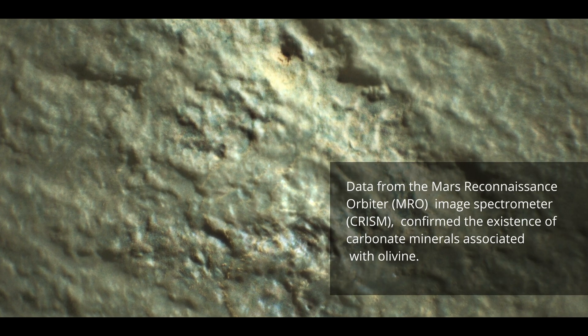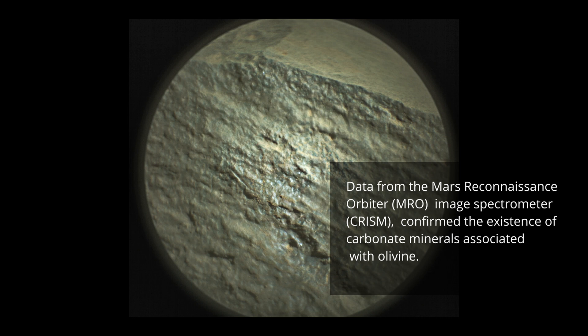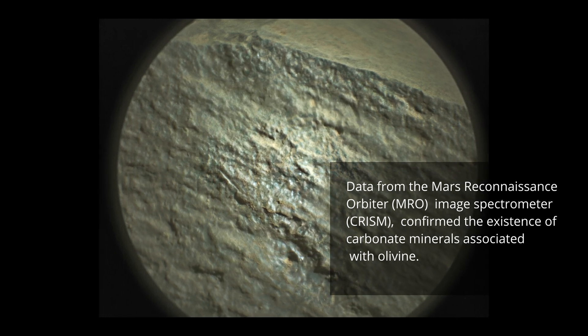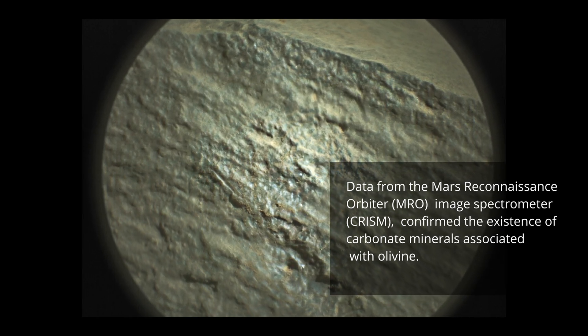Data from the Mars Reconnaissance Orbiter image spectrometer confirmed the existence of carbonate minerals associated with olivine.